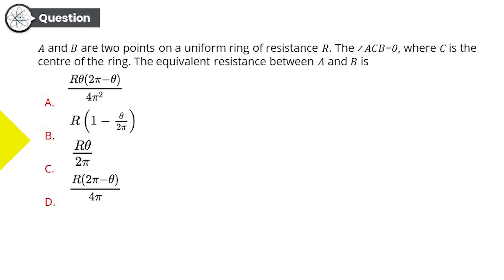Hey guys, you have done till now so damn well. Let's continue the energy. Question number 8. A and B are two points on a uniform ring of resistance capital R. Easy. The angle ACB is equal to θ. Okay, where C is the center of the ring. Looks good. The equivalent resistance between A and B is how much?